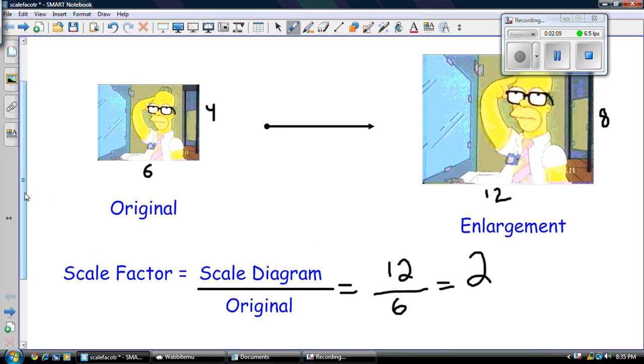And for an enlargement, you always have a scale factor greater than one. So it can't be one, but it'll be greater than one.